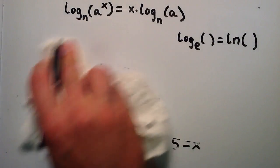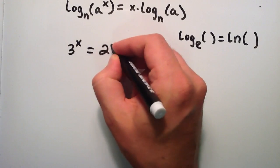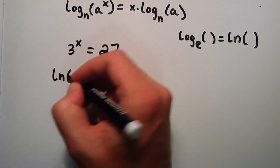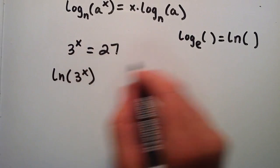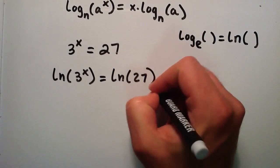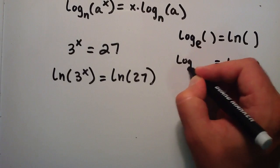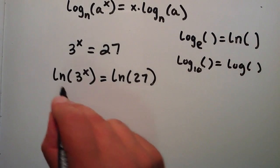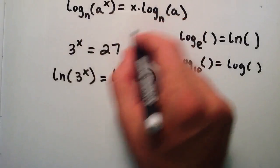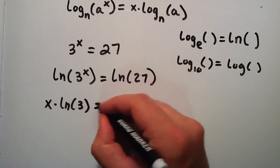Let's do one more example. This time we're going to do 3 to the x equals 27, and we're going to use the same property to find out what x has to be to make this statement true. We simply take the natural log of both sides — we could use a log of any base, but I like to use the natural log since I have this button on my calculator. That's equal to the natural log of 27. You can also use the LOG button, which is log base 10. Now we have the natural log of 3 to the x equals the natural log of 27, and we're going to use this property to move the x out front. So now we have x times the natural log of 3 equals the natural log of 27.